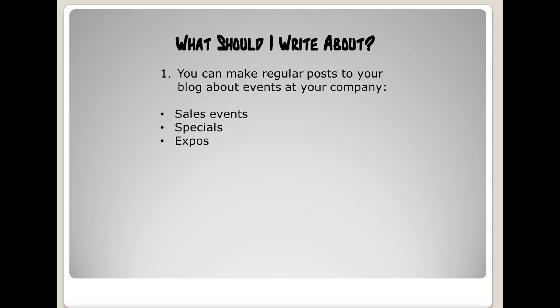You can post things like sales events, specials your company is having, expos where you're displaying your vehicles, and things of interest to people. A good rule of thumb is about 20% of your postings can be personal — things happening with your sales staff, like someone getting married or having an anniversary. People find those types of things interesting. But you're mainly trying to talk about the benefits of your products and showing off new products, while downplaying hard selling quite a bit.